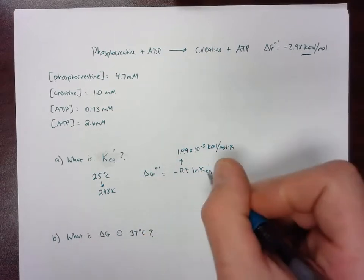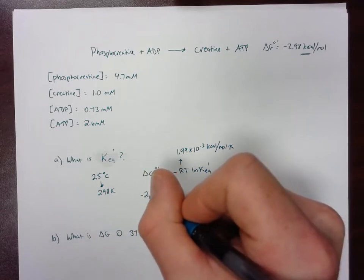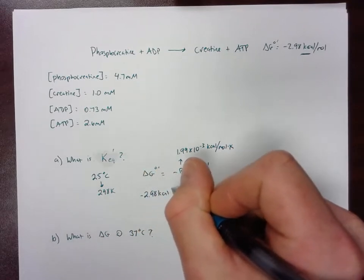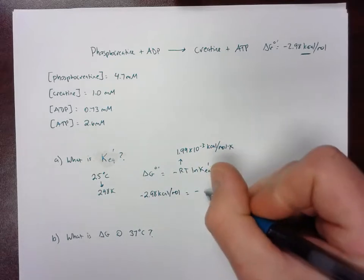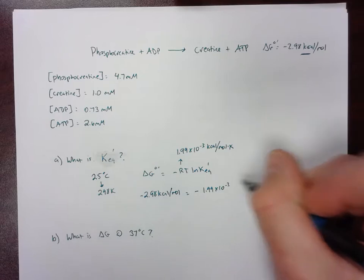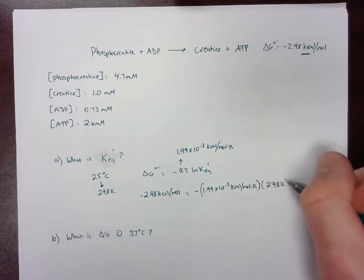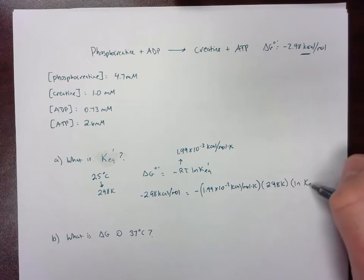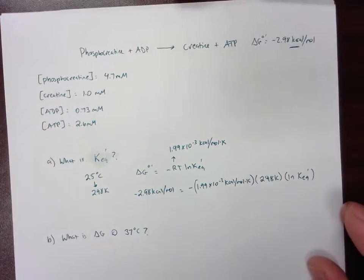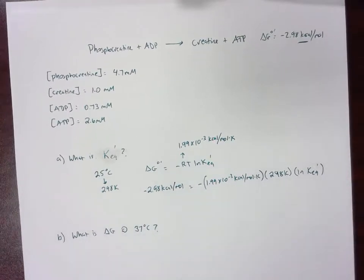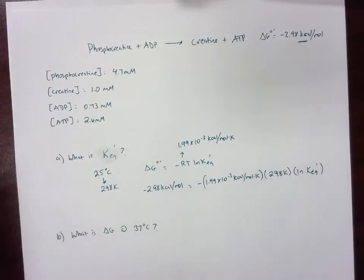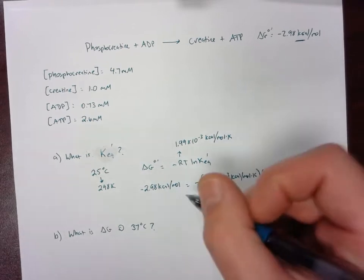Let's just plug everything in and solve for KEQ. Negative 2.98 kilocalories per mole equals negative, and then our temperature here is going to be 298 Kelvin, and then we're solving for this natural log term.